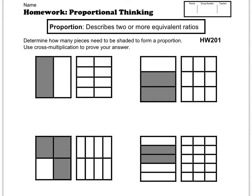Hello and welcome to Homework Help for Monday night, January 14th, 2013. We're going to jump right in with proportional thinking. Proportion describes two or more equivalent ratios. Determine how many pieces need to be shaded to form a proportion. Use cross multiplication to prove your answer.